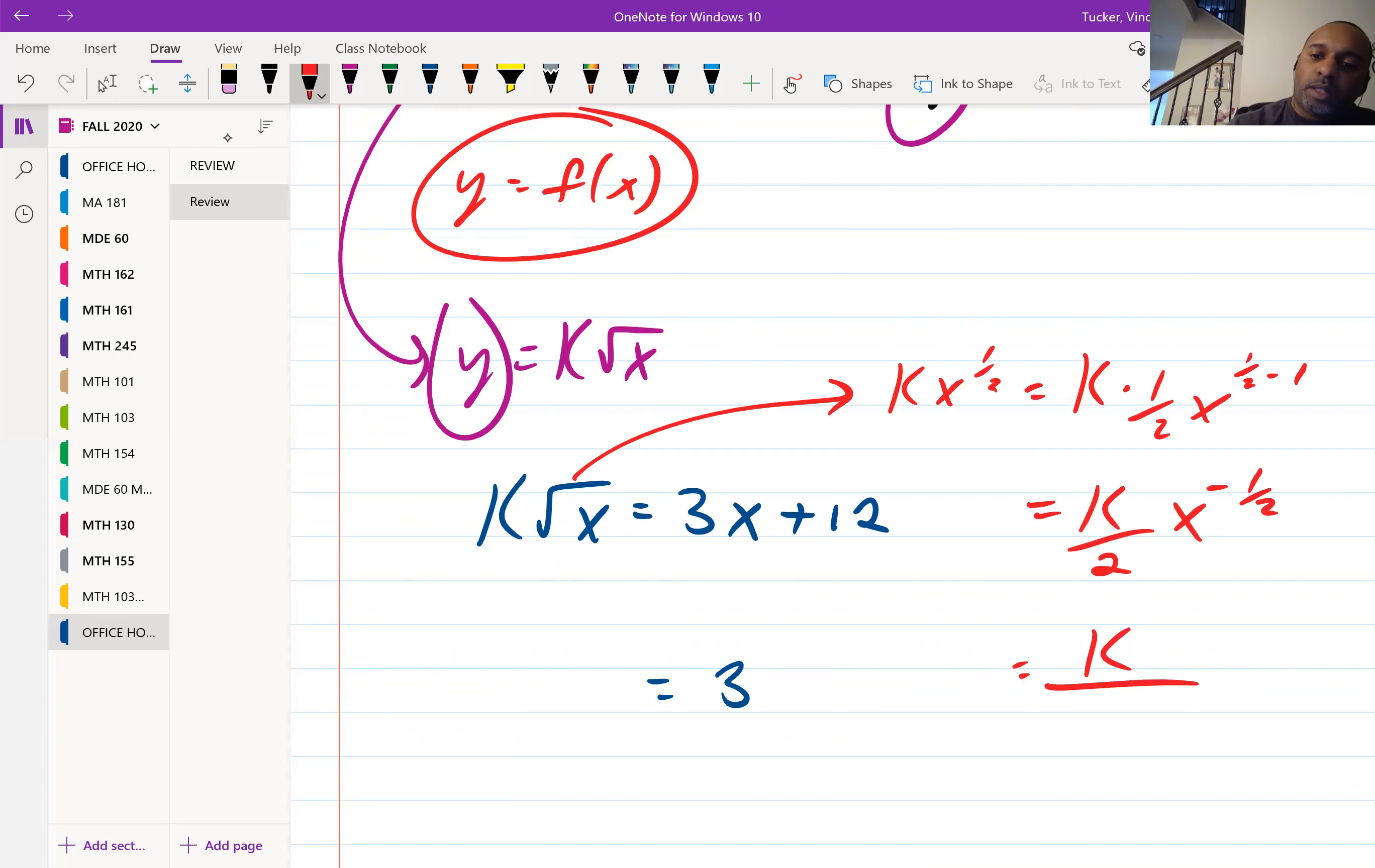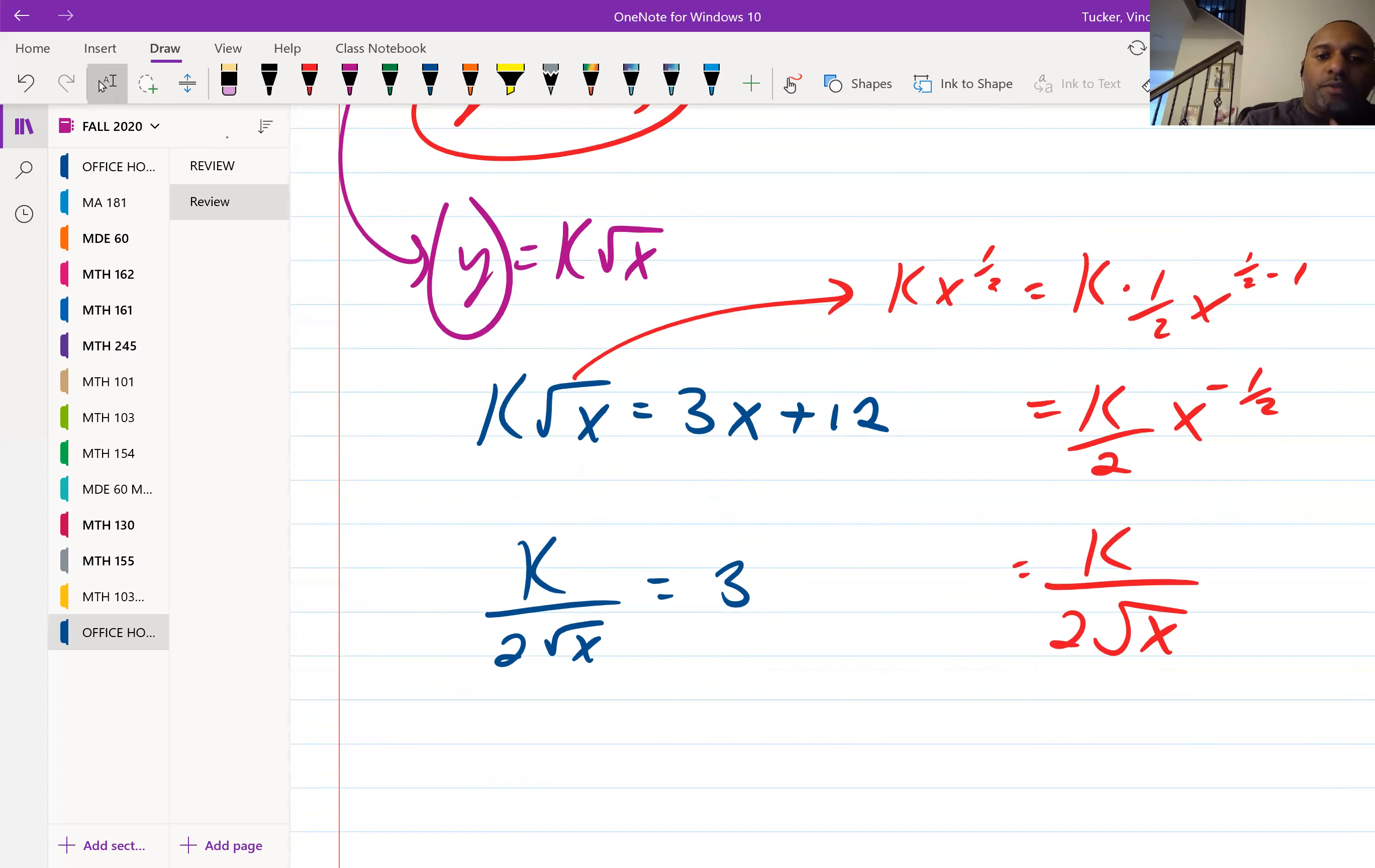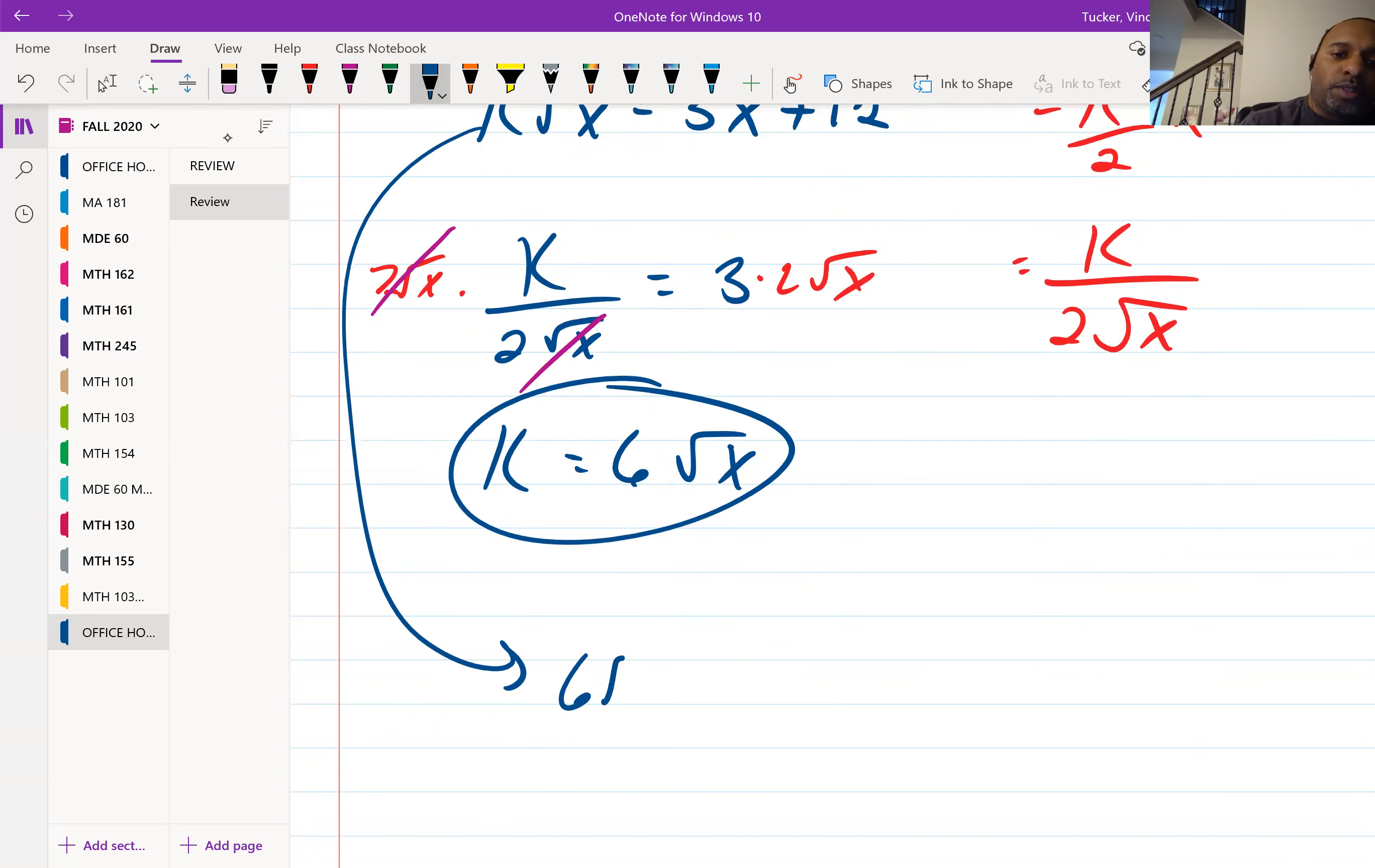That'll be k over 2x to the negative one-half. And then bring it down to the bottom, k over 2 square root of x. So now I can solve for k by multiplying both sides by 2 square root of x. k is equal to 6 square root of x. And now I can take k, plug it back in right here. So 6 square root of x times square root of x equal to 3x plus 12.